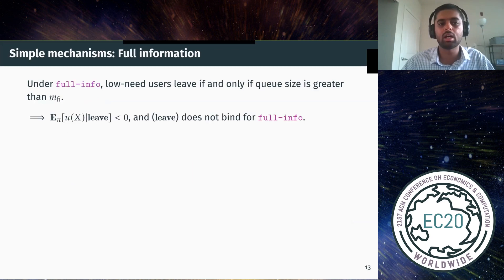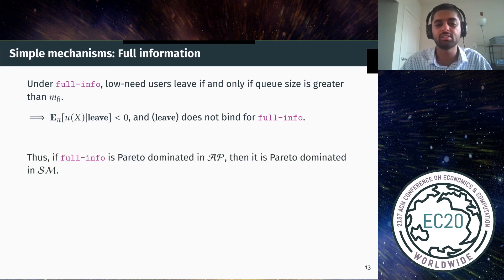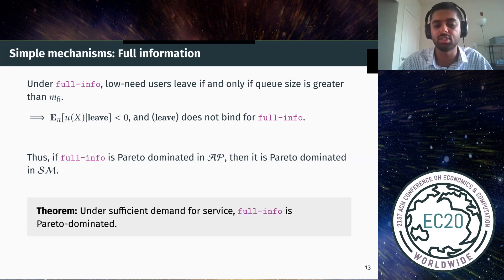At the other extreme, under the full information mechanism, low-need users leave if and only if the queue size exceeds their full information threshold M_FI. Whenever they receive the leave message, their expected utility for joining is strictly negative, so the leave obedience constraint does not bind. Our structural result then implies that if full information is Pareto dominated in the class of admission policies, it must be Pareto dominated in the class of signaling mechanisms. This holds whenever there is sufficient demand for service. So under reasonable assumptions that hold in practice, both full information and no information are Pareto dominated, and sharing information carefully can improve welfare for all types.